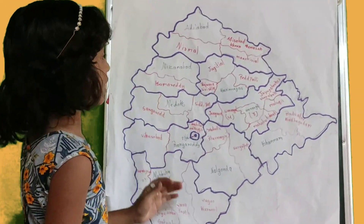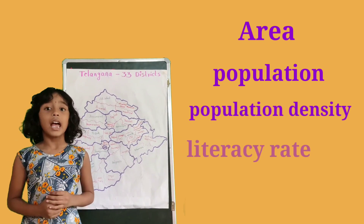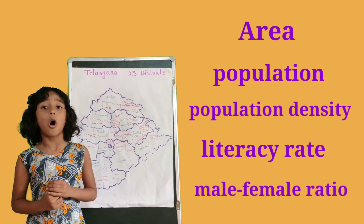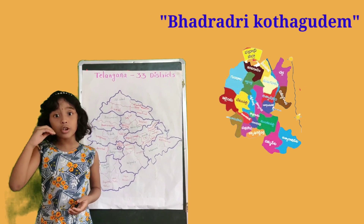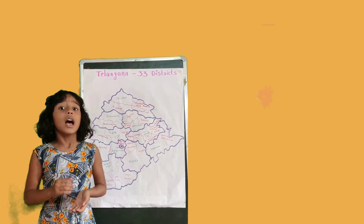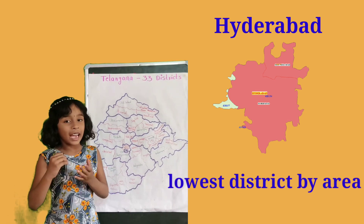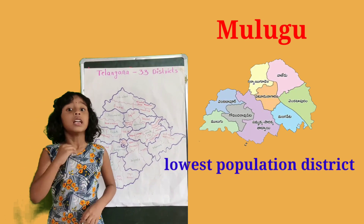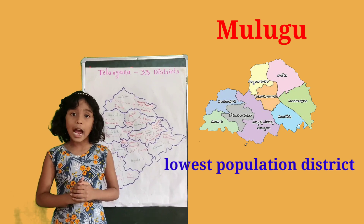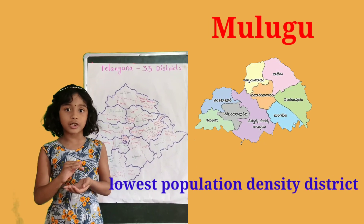These are the 33 districts in Telangana state. Now we are going to discuss about area, population, and population density. Bhadradri Kothagudem district is the highest district by area. Hyderabad district is the lowest district by area. Hyderabad district is the highest population district in Telangana. Mulugu is the lowest population district. Hyderabad district has the highest population density; Mulugu has the lowest.